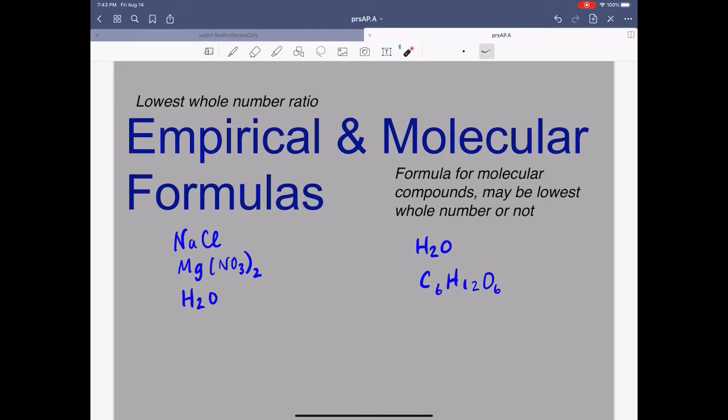Empirical and molecular formulas. Empirical means lowest whole number ratio, such as for sodium chloride, magnesium nitrate, and water. These are all unable to be reduced. The subscripts will all be in the lowest whole number ratio. A molecular formula may be lowest whole number ratio, or might not be.